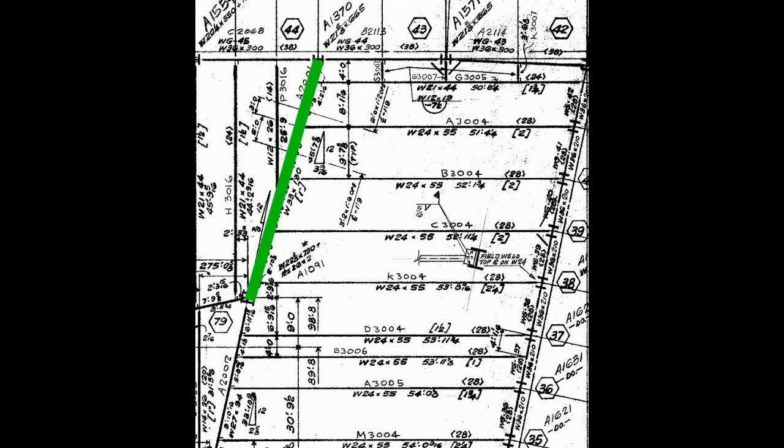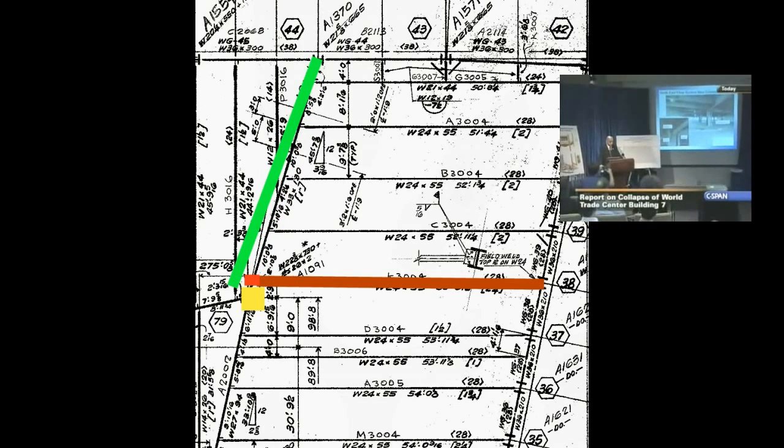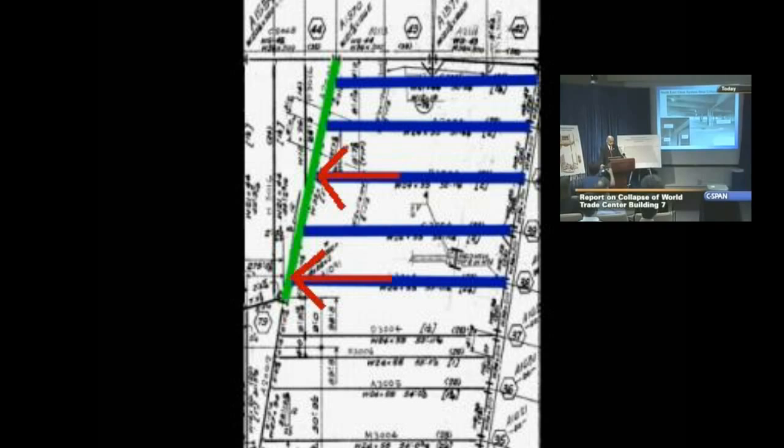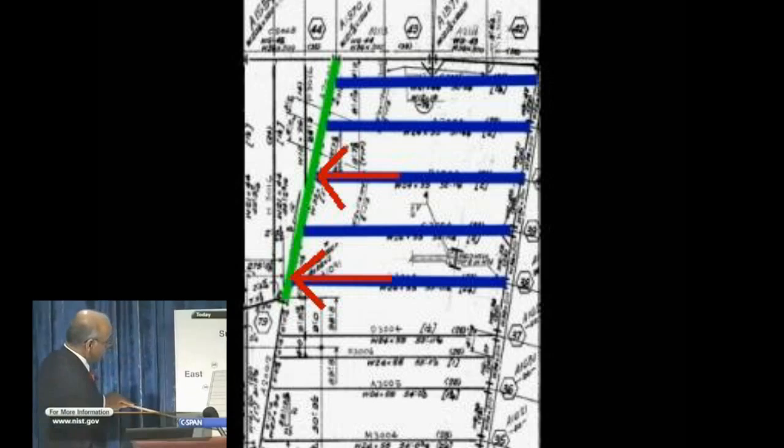What NIST actually blamed for the collapse is thermal expansion of long-span floor systems located on the east side of the building. Shown in green here is the girder that failed, connecting column 79 to column 44.